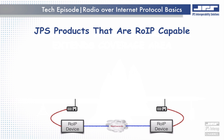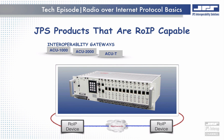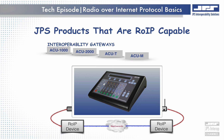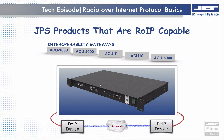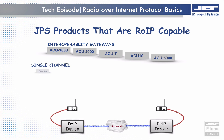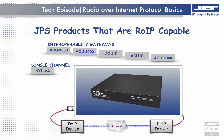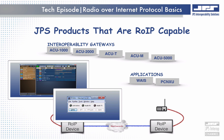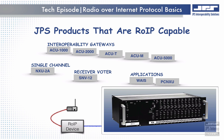Nearly every JPS Interoperability Solutions product and application contains some form of ROIP — whether it's the DSP-2 or DSP-3 modules in the ACU-1000, ACU-2000, or ACUT, the two optional ROIP channels in the ACU-1000, or the 12 available ROIP channels in the ACU-5000. There's also a single-channel ROIP solution in the form of the NXU2A module. Software applications like the Waze Wide Area Interoperable System Controller and the PCNXU application both contain embedded ROIP functionality. Additionally, the CPM-3 module in the SNV-12 receiver voter contains an ROIP element that allows the PCNXU application to remotely listen to the voted and transmit audio of the voter.